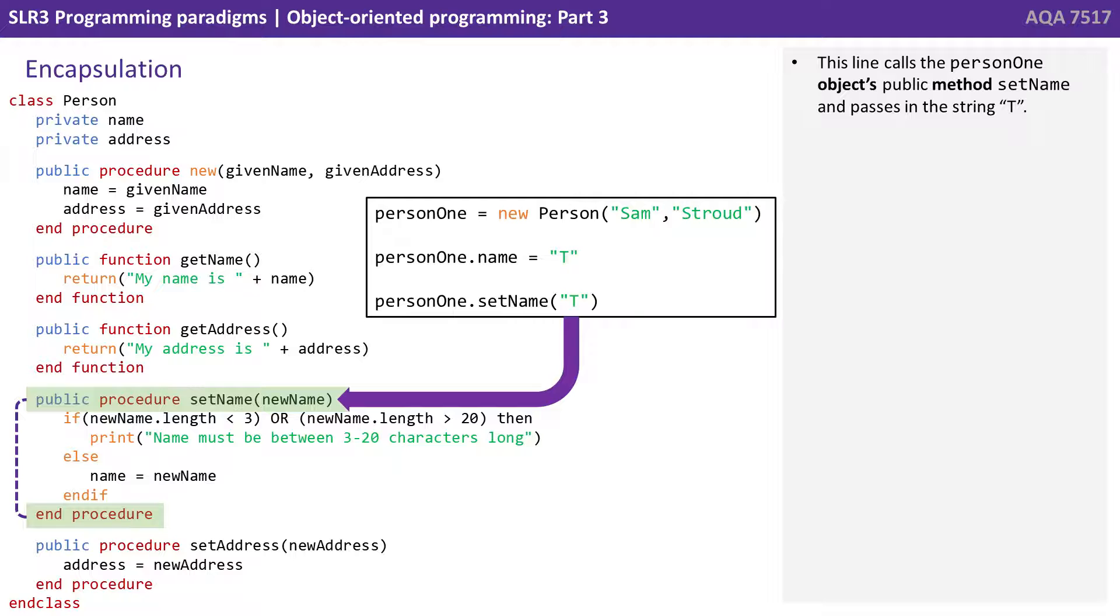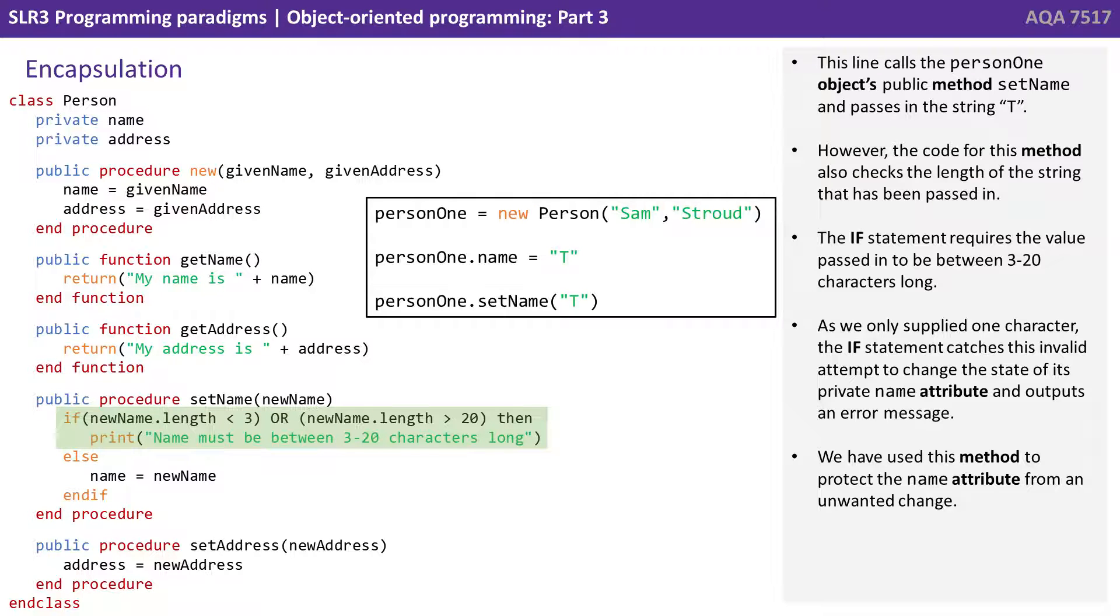This line calls the person1 object's method setName and passes in the string t. However, the code for this method also checks the length of the string that's been passed in. The if statement requires the value passed in to be between 3 and 20 characters long.